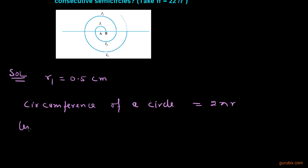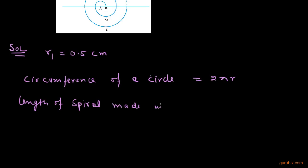that length of spiral made up by first semicircle equals to πR and what is R? R is 0.5, therefore this is equal to 0.5π centimeter.